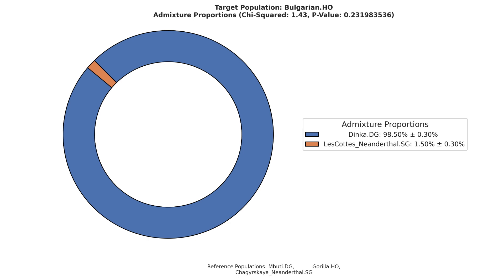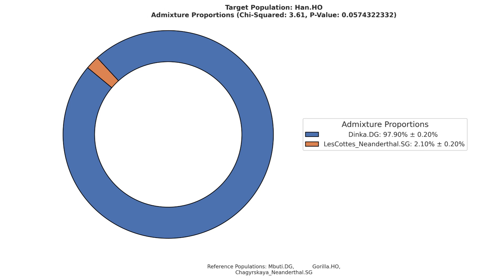The Finnish scored 1.4%, the Bulgarians scored 1.5%, the Gujarati of India scored 1.8%, the Udmurt of Russia scored 1.9%, the Han Chinese scored 2.1%, and the mixed Aztec of Mesoamerica also scored 2.1%.